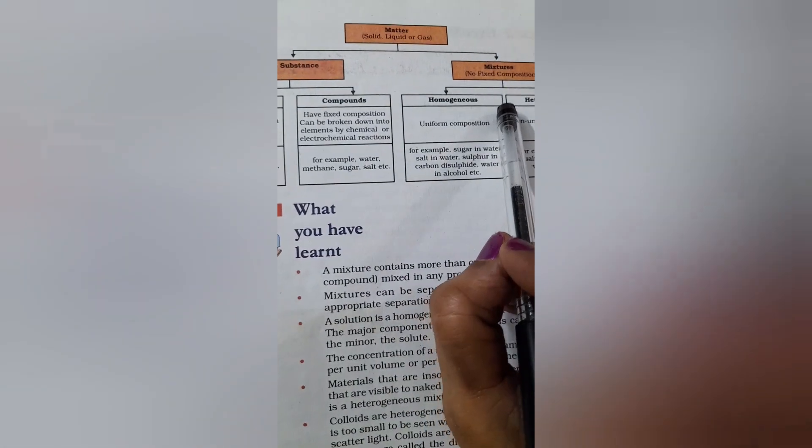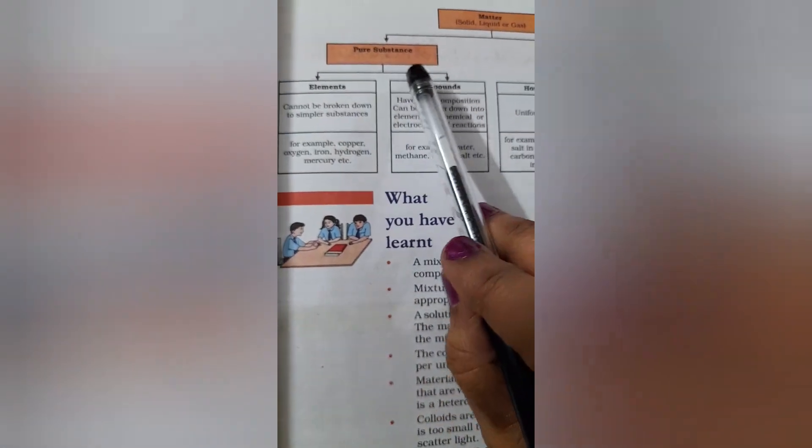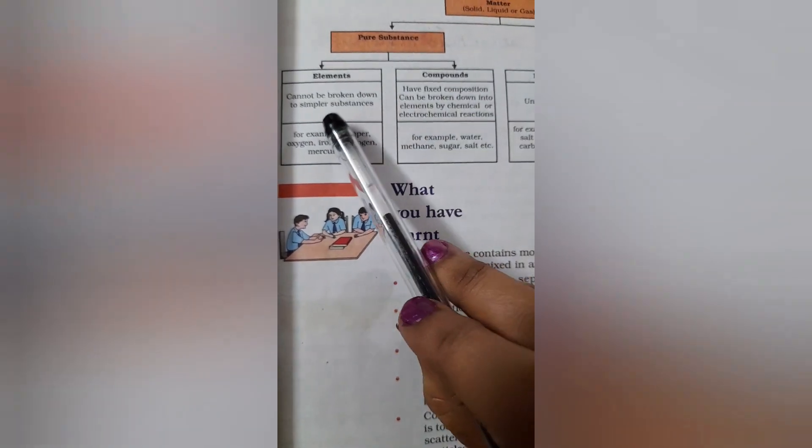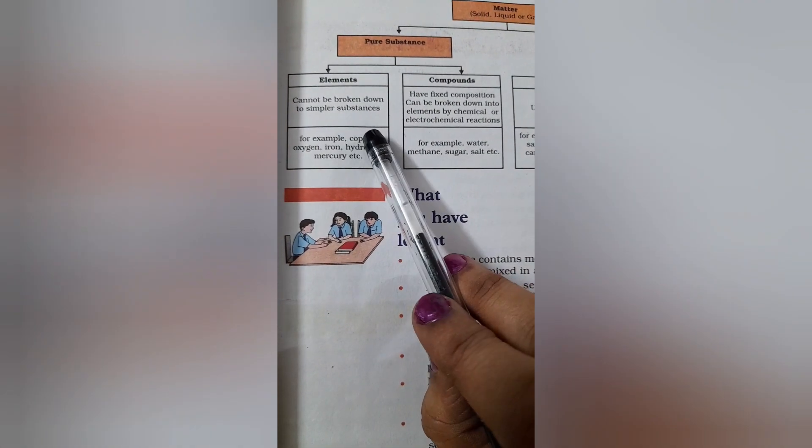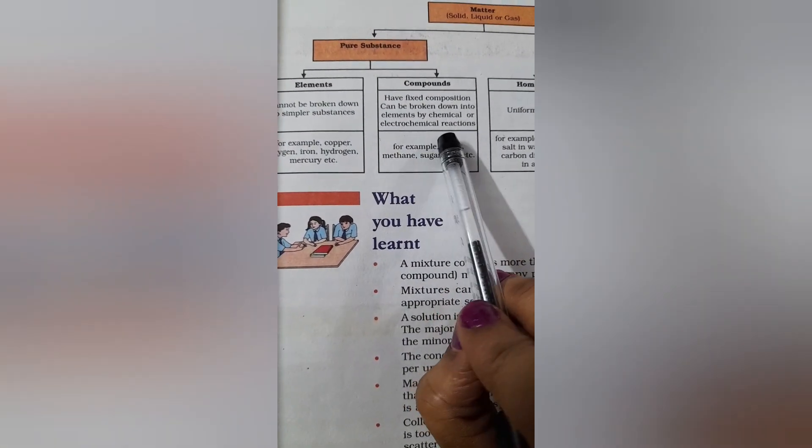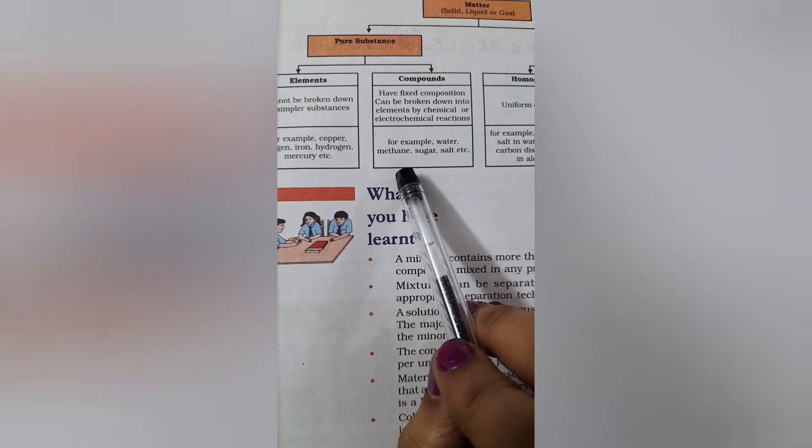Now you can summarize the physical and chemical changes of matter which is given as a table here. Matter is divided into pure substance and mixture. Learn this table, it is very useful for you. Pure substance is divided again into elements and compounds. Elements cannot be broken down to simpler substance like copper, oxygen and all that.